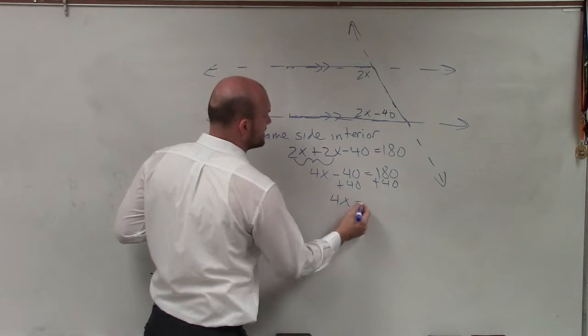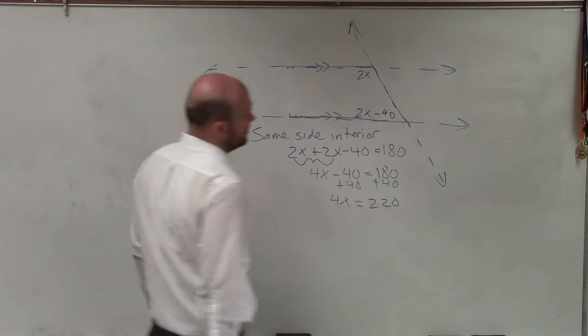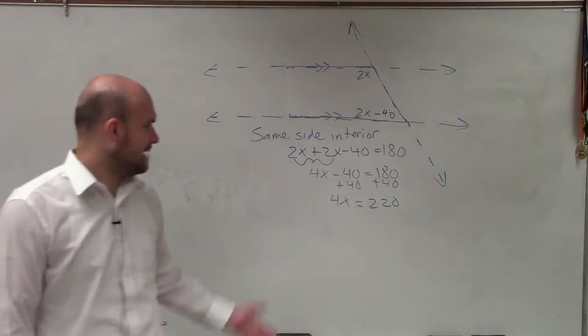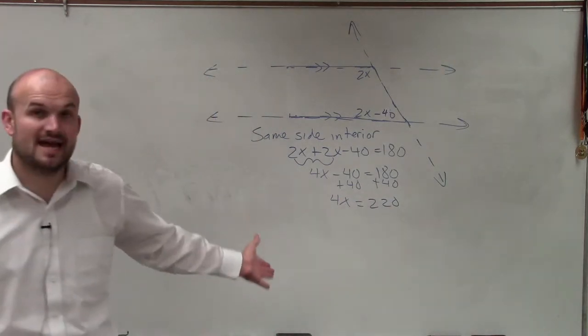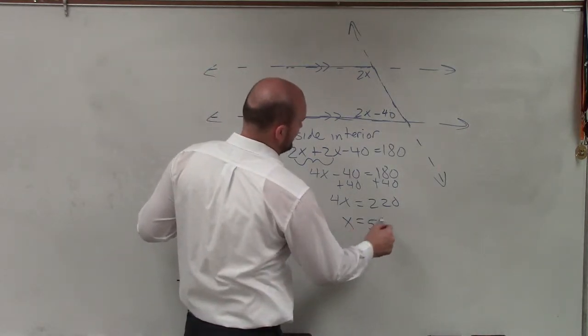And I get 4x is equal to 220. So dividing that by 2 would be 110. Divided by that 2 one more time would be x equals 55.